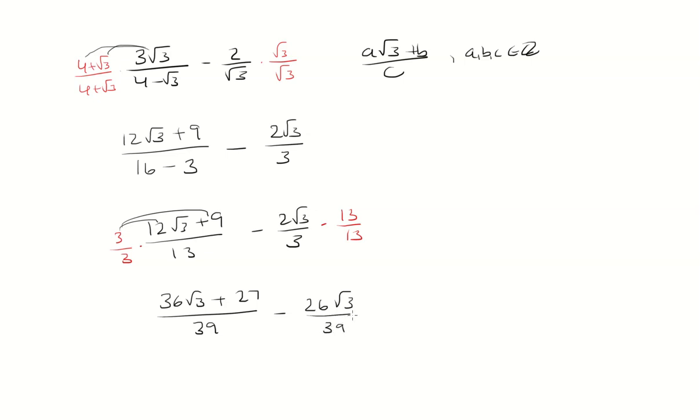They have a common denominator, so I can subtract these. 36√3 minus 26√3 is 10√3, then we have plus 27 over 39.